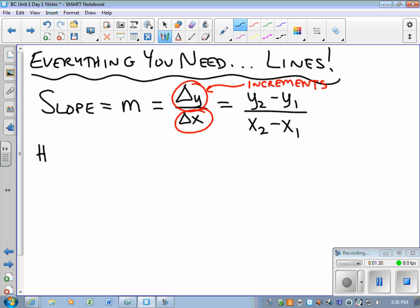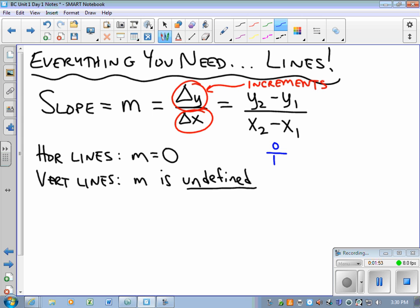Things you need to know: if a line is horizontal, its slope is zero. If a line is vertical, its slope is undefined. This is very straightforward. Horizontal line: the change in y is zero, zero over some number. Vertical line: the change in y is some number, but the change in x is zero. You cannot divide a nonzero number by zero.